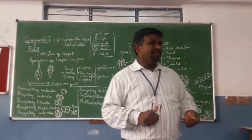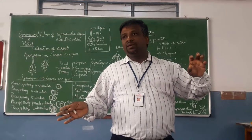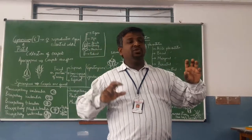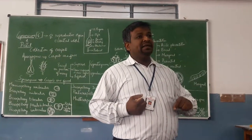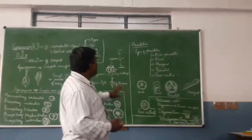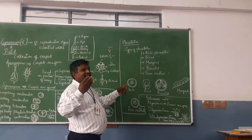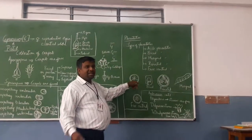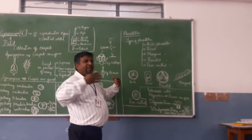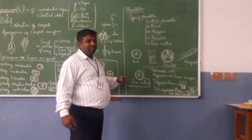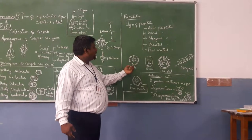Now we will go to the next topic: placentation. Placenta is a parenchymatous tissue which attaches the ovule to the walls of the ovary. Placentation is defined based on the type of attachment of the ovule to the ovary wall. There are five main types. Axile placentation — you can notice this in lady's finger and also in castor; the septa divide the ovary into locules and the placenta attaches the seeds to the central axis formed by the septa.